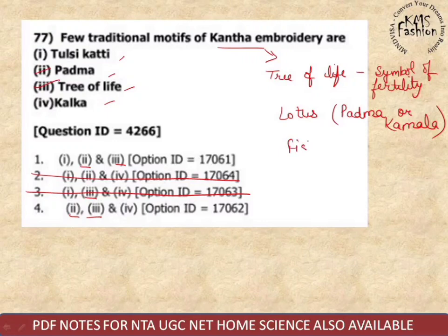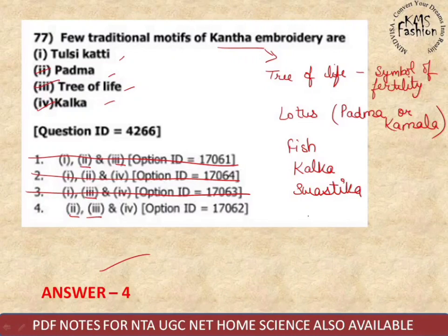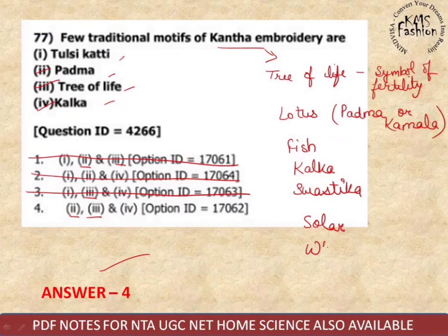Next traditional motive is fish, and after that is Kalka — the Kalka motive is also present. So the correct answer is option number four. Other traditional motives include Swastik, solar, and wheel. These are all the traditional motives used in Kantha embroidery.